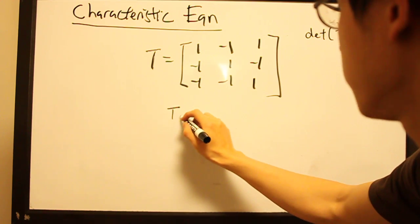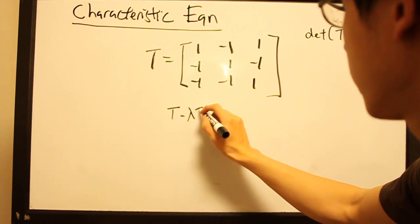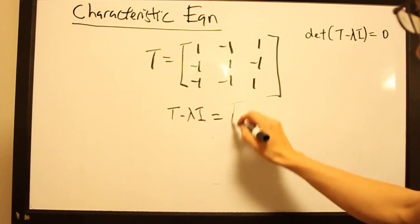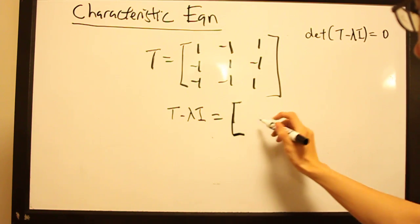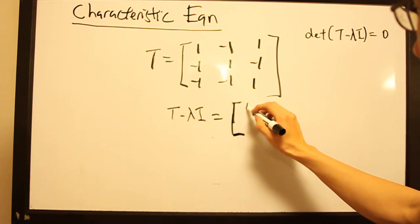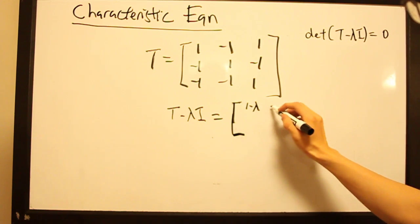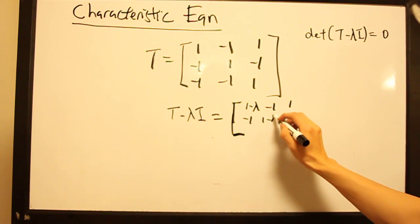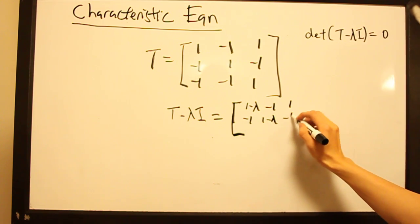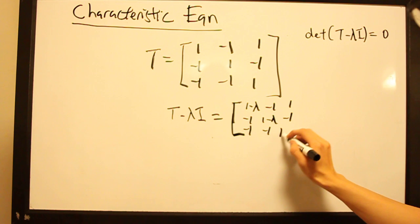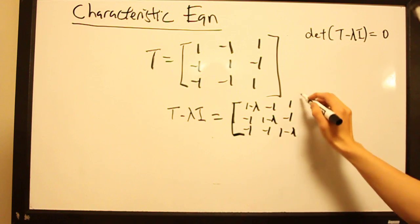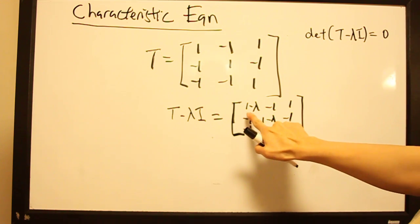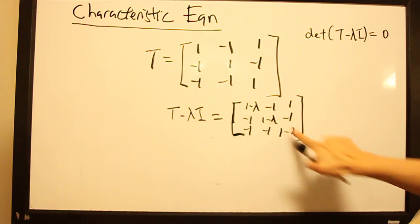So t minus lambda i looks like this: along the diagonal we have 1 minus lambda terms, and the off-diagonal entries remain as before. Basically we are adding a minus lambda term along the diagonal.